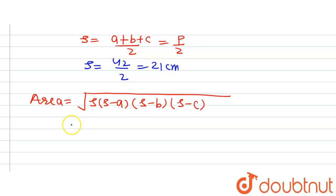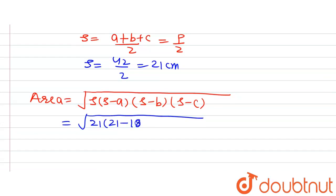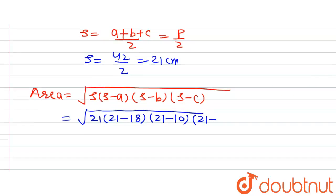Now putting in the values of s, a, b and c we will get under root s is 21. Now a is given as 18 cm so 21 minus 18, b is given 10 cm so 21 minus 10 and c is given 18 plus 10 that is 14 cm, so 21 minus 14.